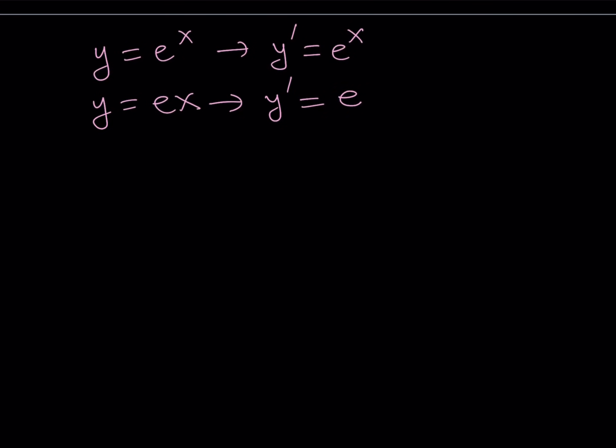So e to the power of x and e. Those are the derivatives. Now, we notice that x equals 1 is a solution, because it makes both of these equations e. So that is a solution. And what happens with the derivatives? At x equals 1, you have the y prime being equal to e. And here, y prime is also equal to e. Because it's always e. It is constant.